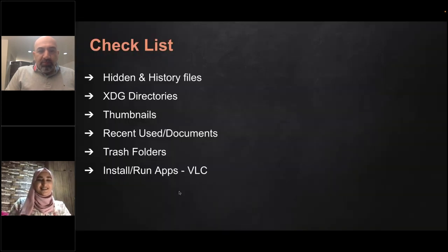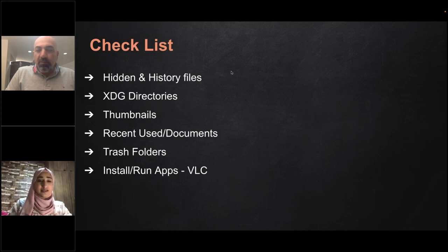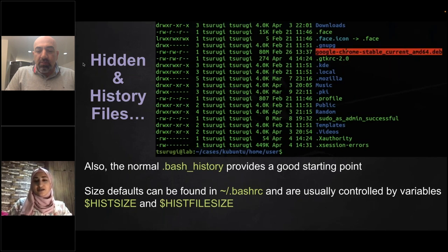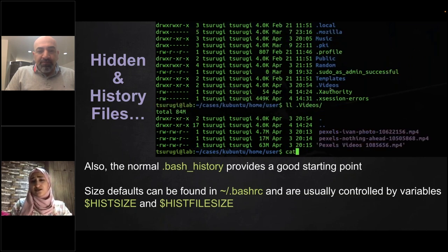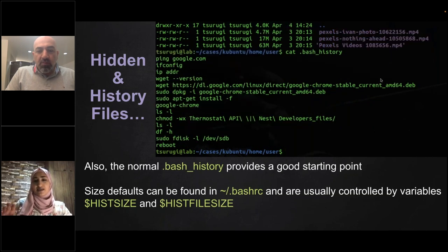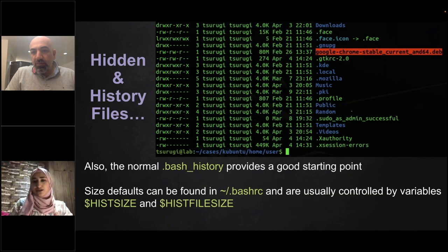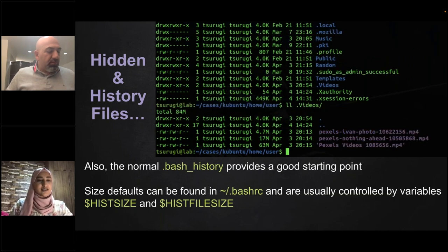Here is our checklist — not comprehensive due to time, but covering key artifacts with their meaning and relevance for investigation. The first and simplest artifact is hidden files. In Linux, if you want to hide a file or directory, you simply rename it with a dot at the beginning. Any file or directory whose name starts with a dot is hidden and won't appear with a standard directory listing. You need to check for hidden files and directories at the start of your investigation.